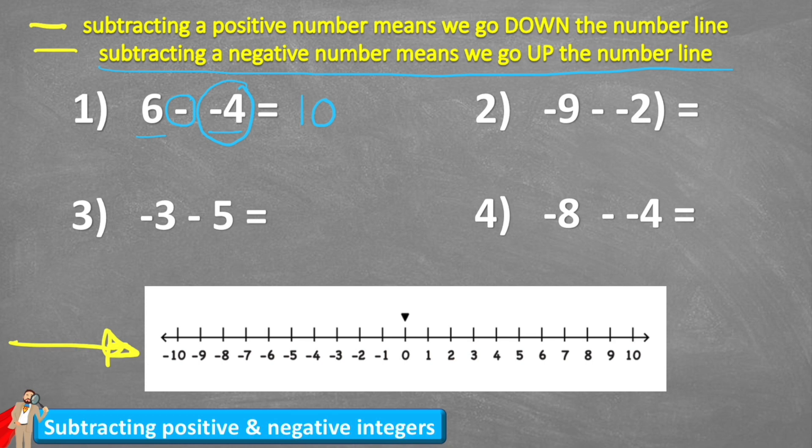Let's have a look at question two. And this time we're starting at negative nine. Find that on the number line. There it is. And this time I am subtracting a negative two. Now if I was adding a negative two I would come one, two down my number line because that would be adding more debt. But this time I'm taking away some debt. So therefore I come up the number line one, two and I land at negative seven. So negative nine subtract a negative two leaves me with negative seven. Again following that rule, subtracting a negative number means we go up the number line.